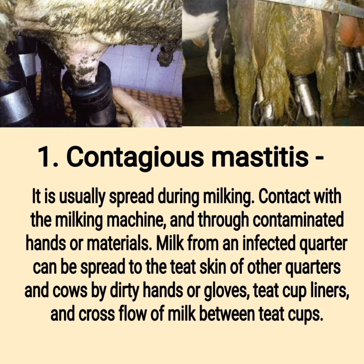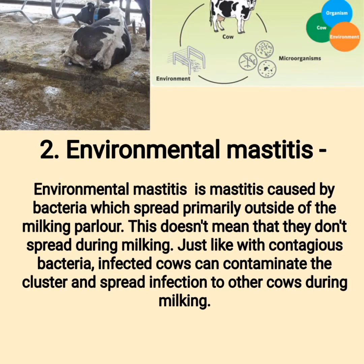(1) Contagious mastitis is usually spread during milking through contact with the milking machine and through contaminated treated hands or materials. Milk from an infected quarter can be spread to the teat skin of other quarters and cows by dirty hands or gloves, teat cup liners, and cross-flow of milk between teat cups.